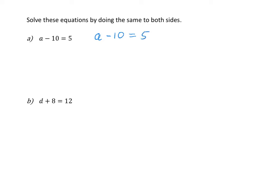I'm trying to get my unknown variable, a, by itself. To do that, I need to get rid of the minus 10. I can get rid of the minus 10 by doing the inverse operation — so the opposite of subtracting 10 is adding 10.